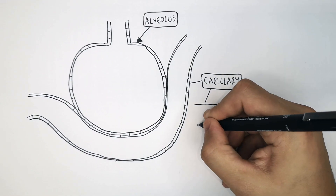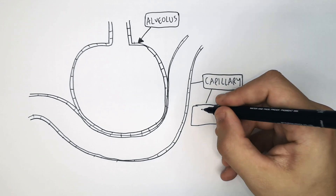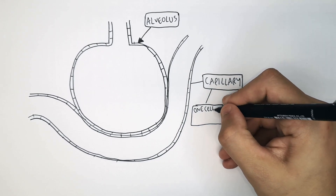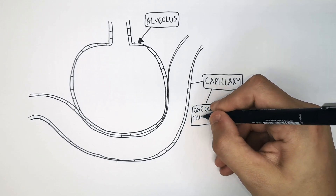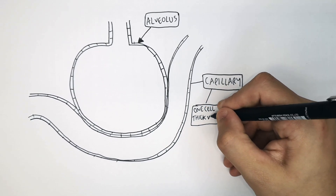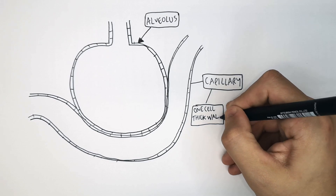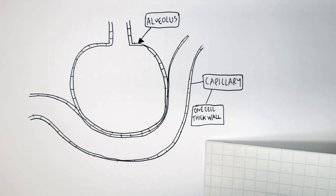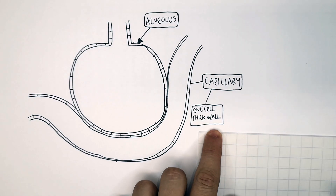and the capillary that surrounds it — both of them have a one-cell-thick wall. I'm now going to show the difference between the rate of diffusion in a one-cell-thick wall and through a two-cell-thick wall.